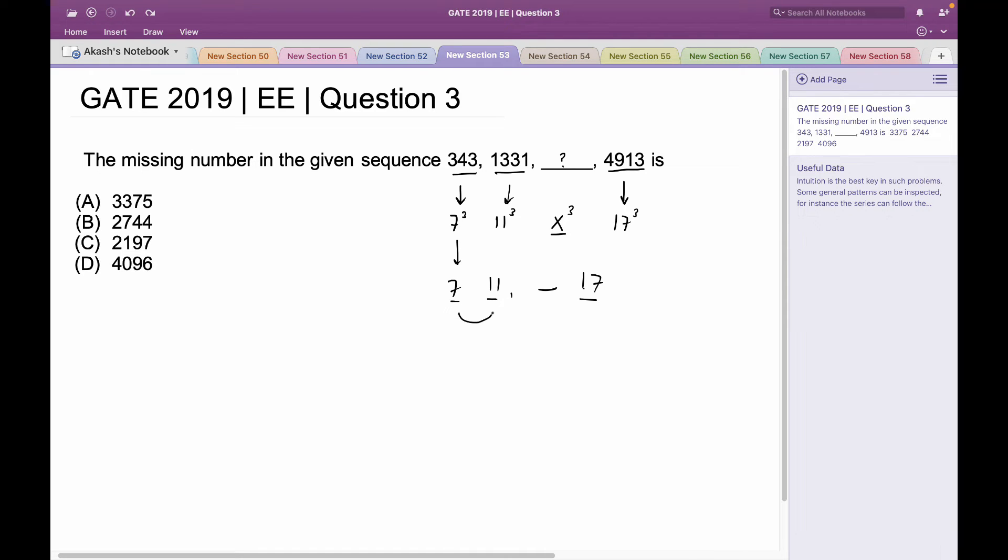The next prime number after 7 is 11, the next prime number after 11 is 13, and the next prime number after 13 is 17. Looking at this pattern, I can safely say that the answer to this problem is the cube of 13.